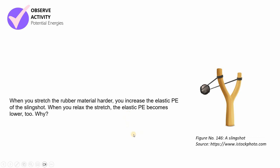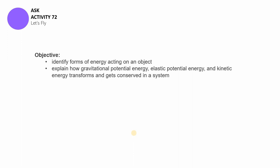Let us explore that idea further with Activity Number 72 titled 'Let's Fly.' The objective of this activity is for you to identify forms of energy acting on an object and to explain how gravitational potential energy, elastic potential energy, and kinetic energy transform and get conserved in a system. The materials you need are: a piece of paper, pen or pencils, rubber bands, masking tape, and a foot rule.